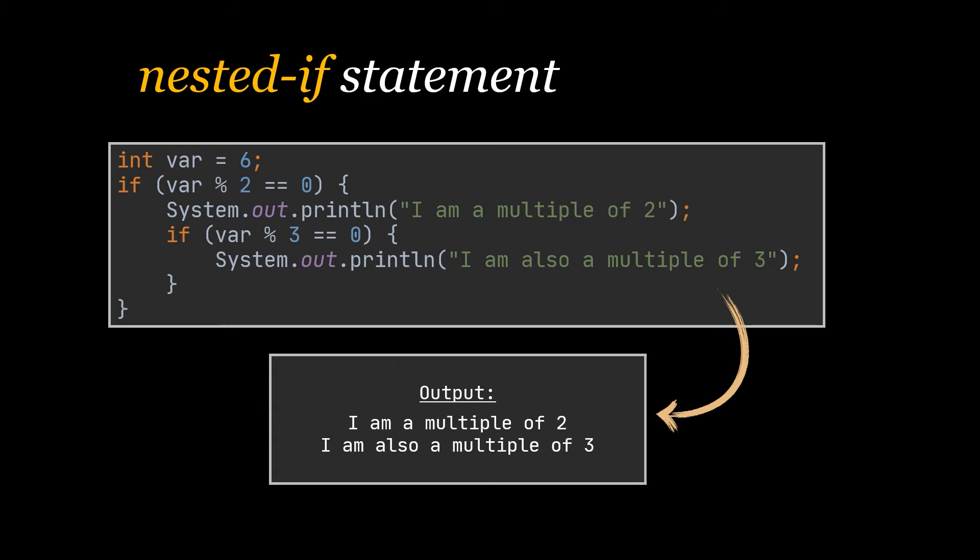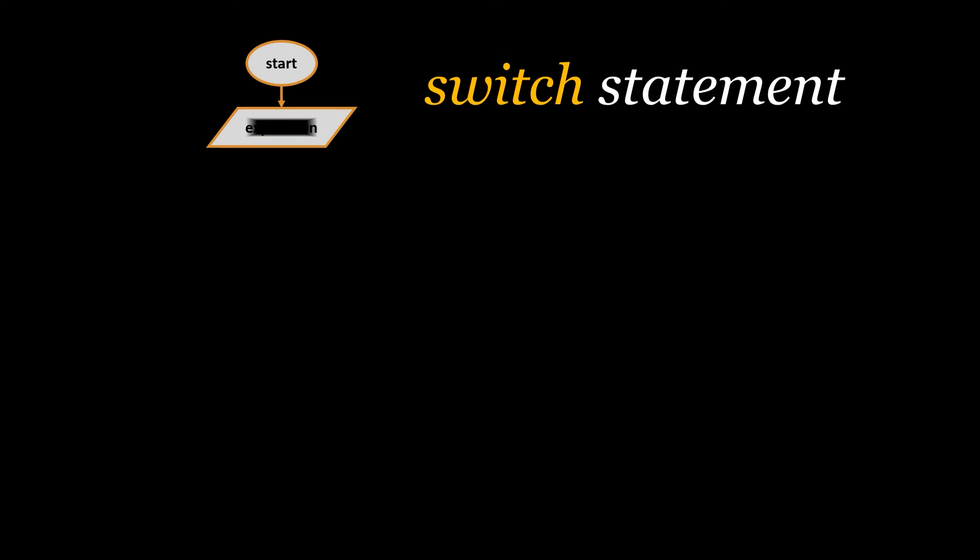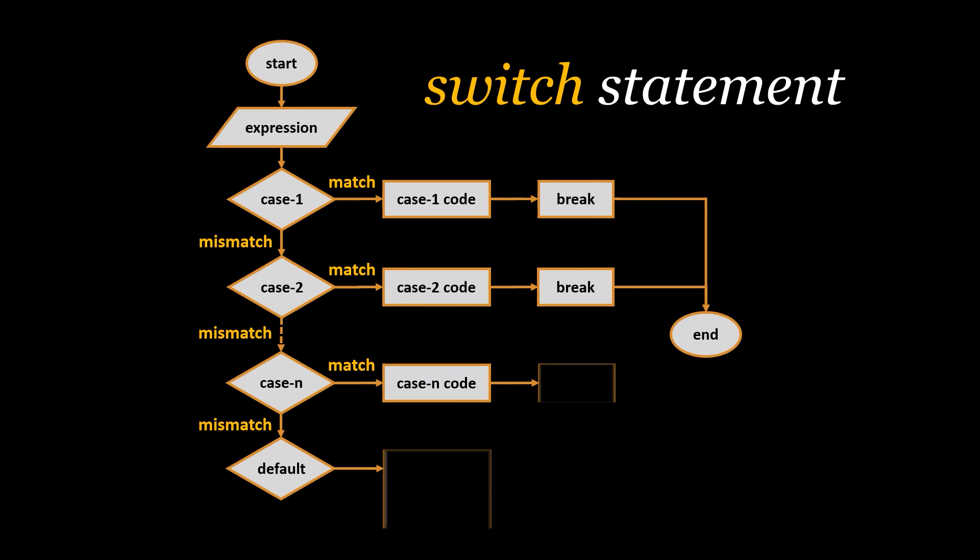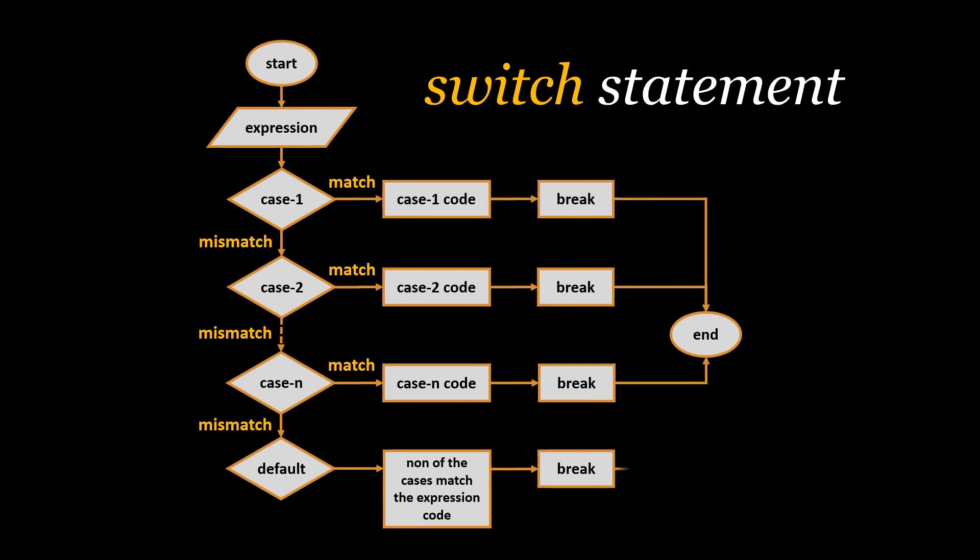The next control statement we are going to discuss is the switch statement. The Java switch statement executes one statement from multiple conditions. It is like the if-else-if ladder statement but with only equal conditions. The switch statement works with all primitive and wrapper types. In other words, the switch statement tests the equality of a variable against multiple values.